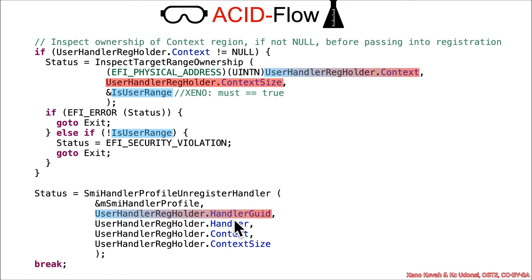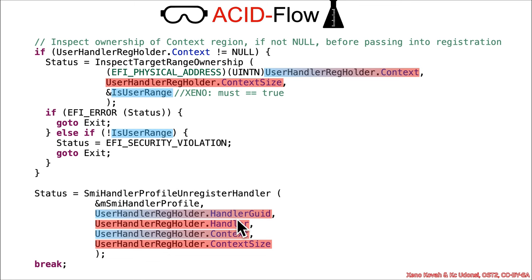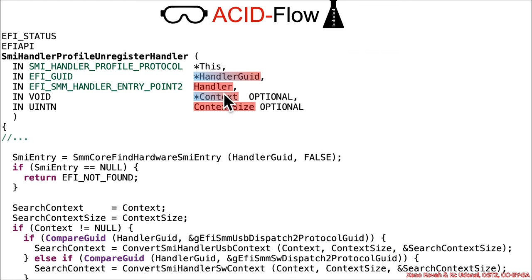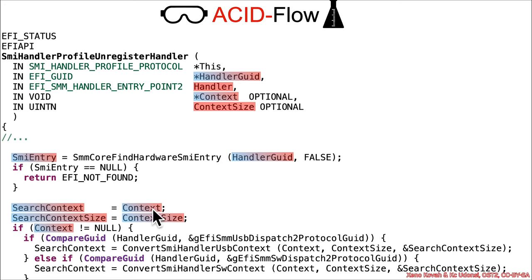This code is now going to take the handler_guid — the specific handler to be looked up and unregistered — going to take the handler, which is the code that was being pointed at that needs to be unregistered and should no longer be handling a system management interrupt. Then the context and context_size. So this is all essentially fully attacker-controlled values, other than the fact that it has to be in user space and the attacker can't clobber kernel space. When those parameters are passed through to SMI_handler_profile_unregister_handler, we've got the handler_guid being used for SMM_core_find_hardware_SMI_entry — some sort of lookup that passes back the SMI entry, presumably registered at some point in the past. Context is placed into the search context and context_size is the search context size.